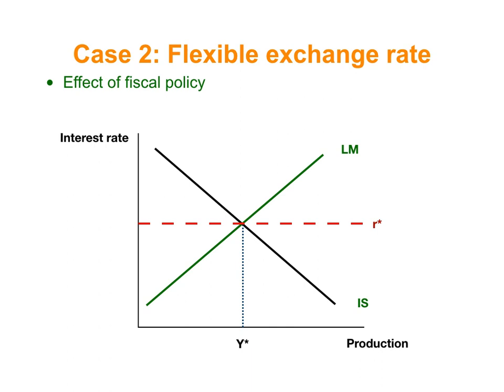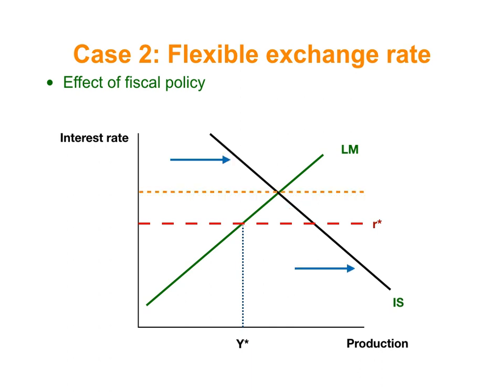Now let's look at the effect of fiscal policy under flexible exchange rate. Fiscal policy — an increase in government spending — is going to shift the IS curve to the right. As a consequence, the local interest rate in Guatemala is going to be higher than the international interest rate, which is going to attract investors from abroad. They will bring US dollars to Guatemala, increasing the supply of dollars.